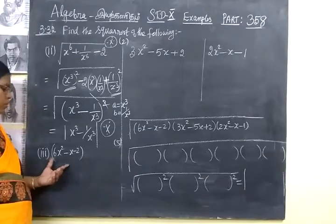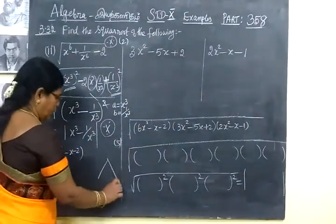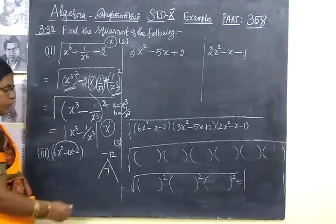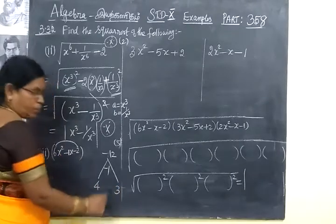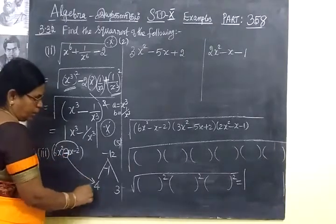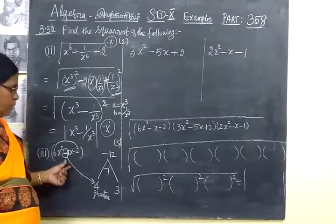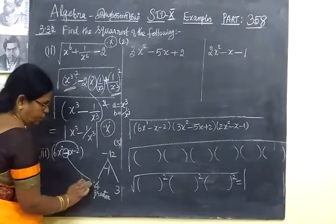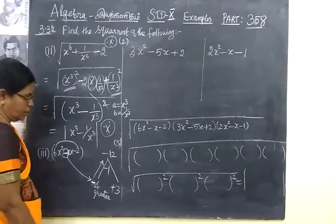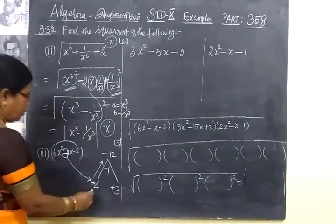Now come to the second and third one. You have to find the square root of the first, second, and third expressions. Multiply one of minus 12, then add separately means minus 1. Here the coefficient is 1. For this you can write 4 and 3. In the middle term the end sign is given — that sign should be taken for the greater number. 4 is the greater number, so you use the middle term sign for the greater number only, so here you are writing minus.